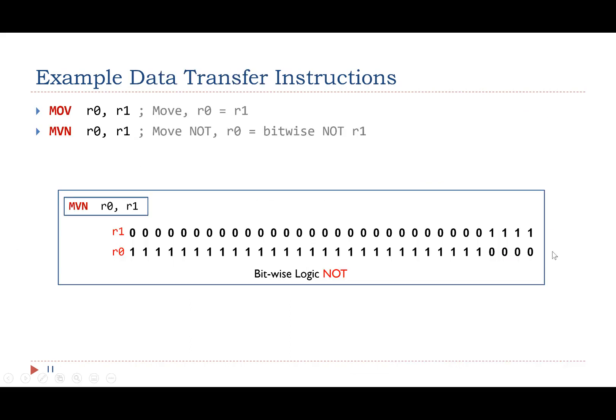Here are two instructions that copy data from one register to another register. In this example, the MVN instruction takes the value of the source operand R1, flips every bit in this value, and then saves the result into the destination register R0.